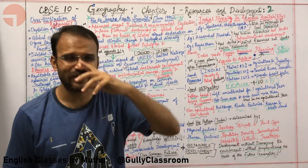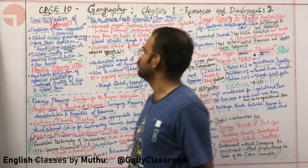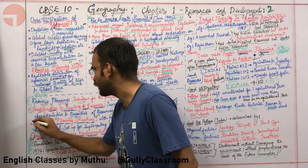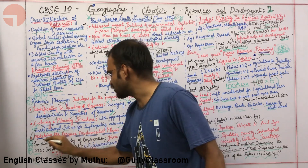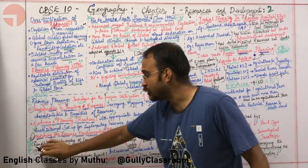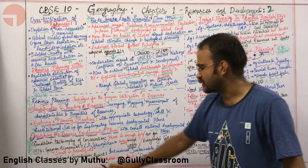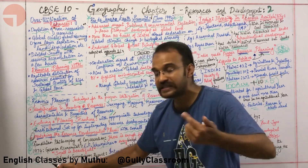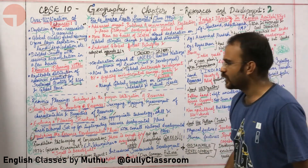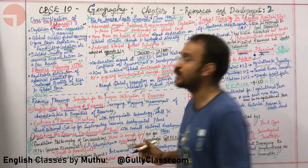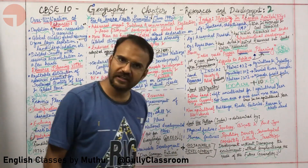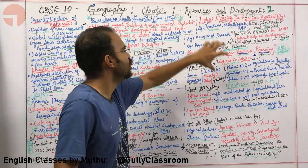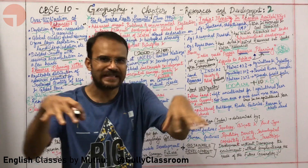That concludes this lecture. Key areas to focus on are: the three steps of resource planning — identification and inventorying, evolving a planning structure, and matching resource development plans to national development plans. Also important for one-mark questions: Gandhian philosophy, E.F. Schumacher's book Small is Beautiful, the Brundtland Commission's other name Our Common Future, and the diverse distribution of resources in India and why India needs good resource planning.